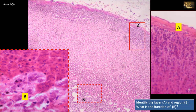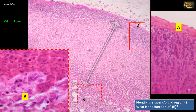Identify the layer A and the region B. What is the function of B? This is a section of the adrenal gland showing an outer cortex and a central medulla. The layer marked A is not a glandular tissue, but is formed of connective tissue representing the fibrous capsule of the gland.